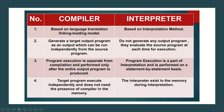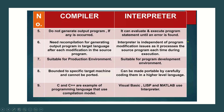Third, program execution in a compiler is separate from compilation and performed only after the entire output program is produced. In an interpreter, program execution is a part of the interpretation and is performed on a statement by statement — or line by line — basis. Fourth, the target program executes independently and does not need the presence of the compiler in memory. But in the case of the interpreter, it must exist in memory during interpretation, and it must always be present every time the program is executed.